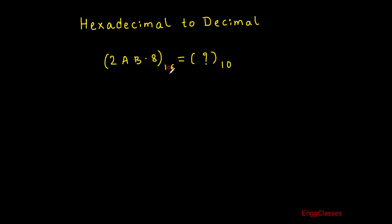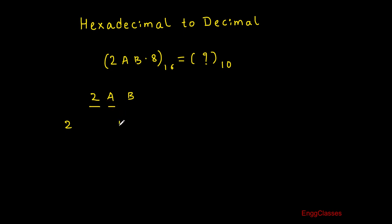Let me first consider the integer part, that is 2AB. The equivalent of 2 in decimal is also 2. The equivalent of A in decimal is 10. The equivalent of B in decimal is 11.